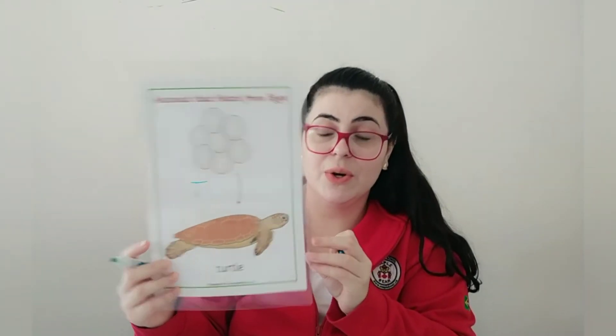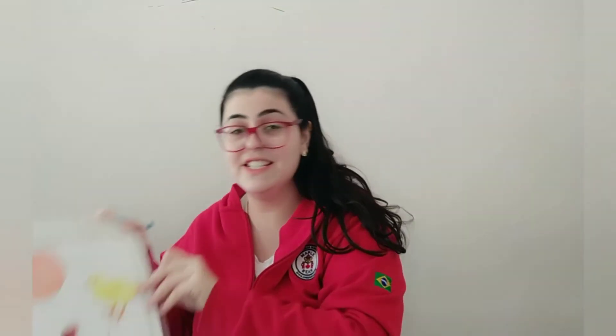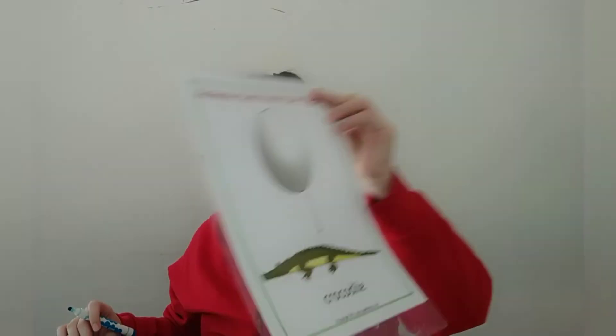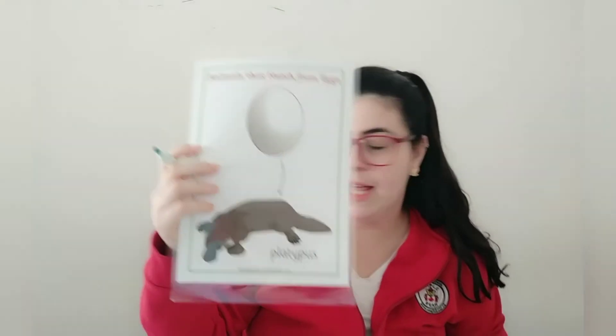If your name starts with letter T, you can draw a turtle. Letter D — dinosaur. Letter C — ch-ch-chicken. Or crocodile. So, if your name starts with letter P, you can draw a platypus.